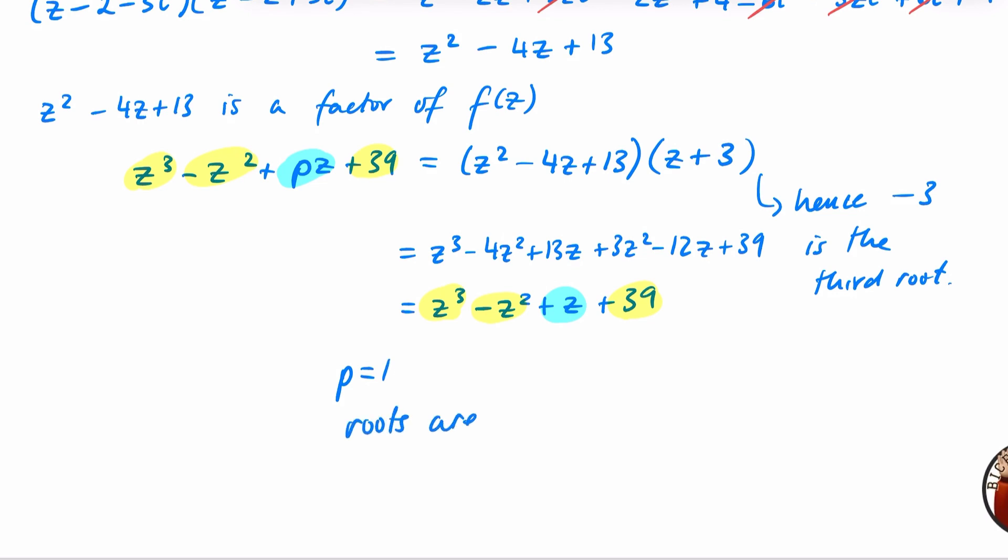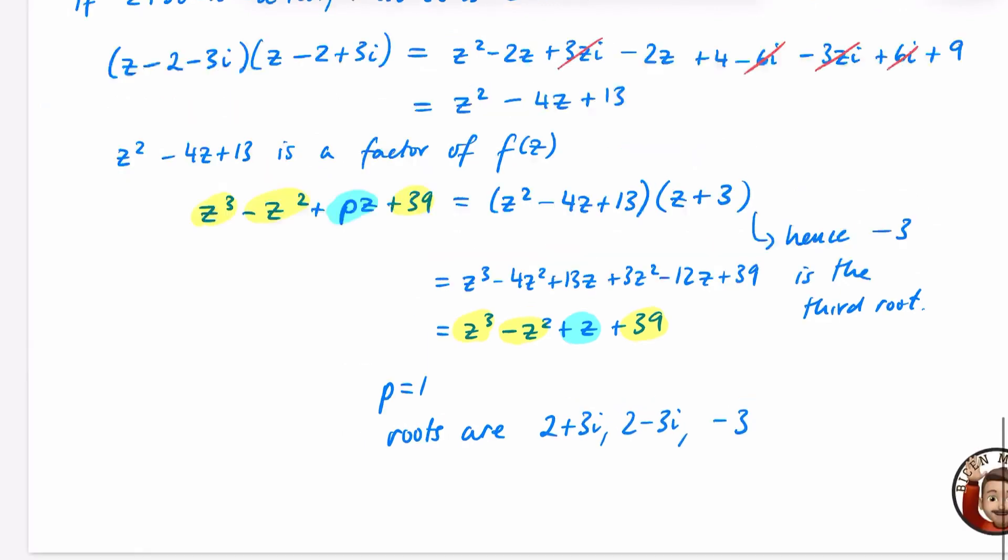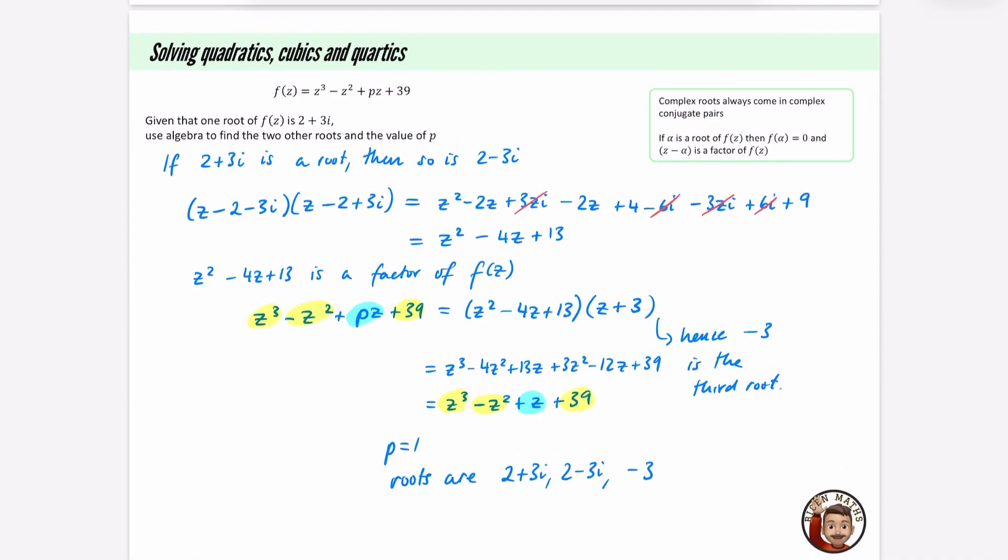And the roots are 2 plus 3i, 2 minus 3i, and minus 3. Now, like I said, there are other ways of doing this. I perhaps could have done a version where I took this and substituted it in and very quickly found out what p was. And then you can go from there as well. There's lots and lots of different ways of going about this. But because it said use algebra, I couldn't find p and then just solve it on the calculator. I did need to do some element of division and things like that. And also this part here, when I quickly figured out this had to be a z plus 3, you could have done this thing algebraically divided by this thing. I just think it's a lot longer. So for further maths, we're trying to kind of spot some of these shortcuts that we have here.